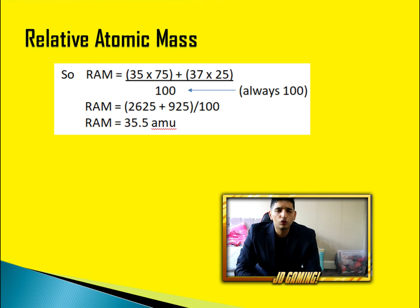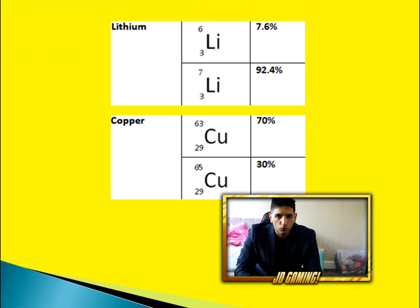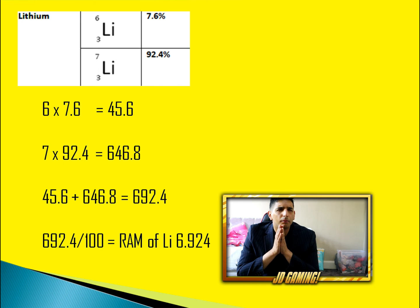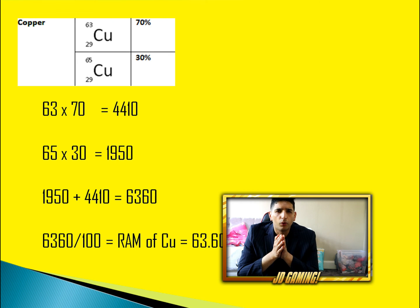Calculating relative atomic mass is extremely important — you don't want to miss out on those marks. Let's now look at lithium and copper. Starting with lithium: it exists as isotopes. Do 6 times 7.6, and 7 times 92.4. Adding those gives 45.6 plus 646.8, which equals 692.4. Divide by 100 and the relative atomic mass of lithium is 6.924.